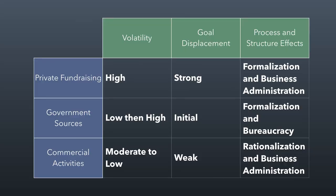There was a lot of fear that nonprofits would become commercialized in a way that would distract them from their missions, but that hasn't happened contrary to expectations. Nonprofits have been able to serve their missions in a more sustainable way because of a reliance on commercial activities. Volatility for commercial activities is moderate to low, goal displacement is weak, and there is a lot more business administration and rationalization, meaning nonprofit operations are now subject to the core idea of profitability or sustainability. For your financial report, you'll look at the revenue sources your chosen nonprofits rely upon and analyze how these revenue sources affect the way they operate.